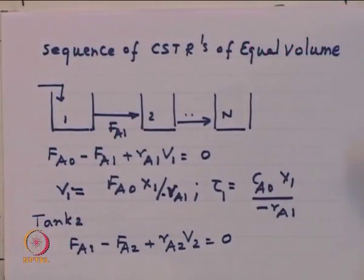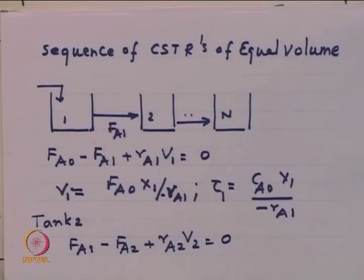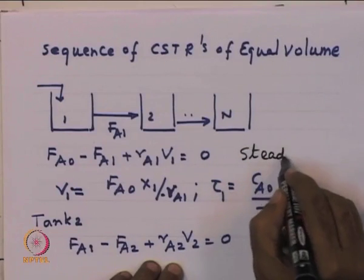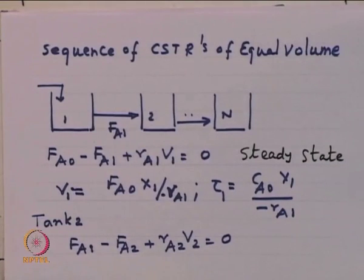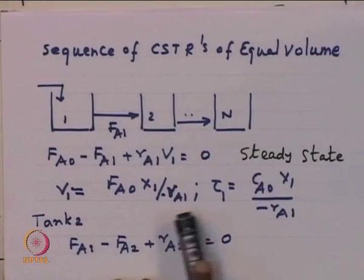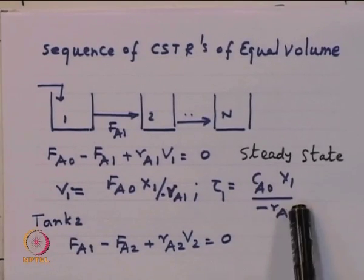For a CSTR, recognizing that residence time τ = V/V_0 (volume of equipment divided by the volumetric flow at the inlet), we can write the design equation in terms of volume or in terms of residence time: τ = C_A0·X_A/(−R_A). Both state the same thing — residence time and reactor volume are related depending on the volumetric flow rate at which we process the fluids.